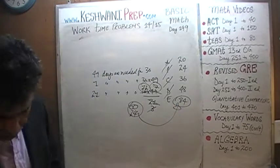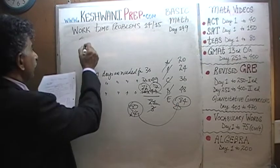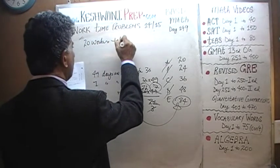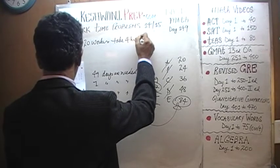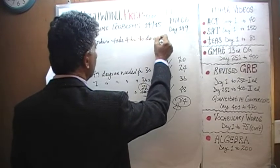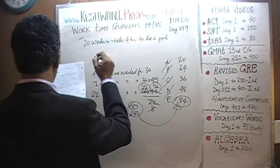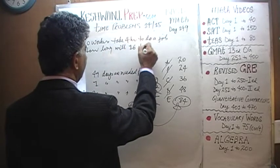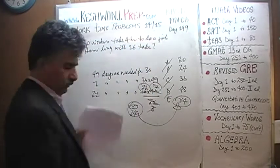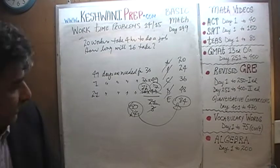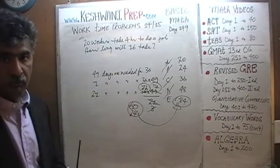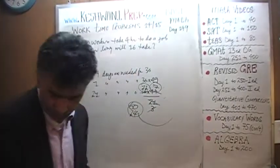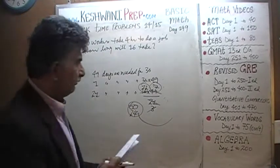Let's do one more. We are told that 20 workers take 4 hours to do a job. If you only put 16 workers on the job, how long will it take? The answer choices are 3, 4, 5, 6, and 7 hours.